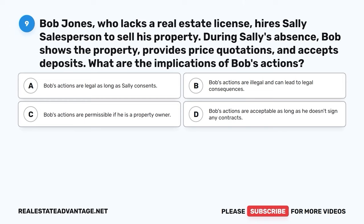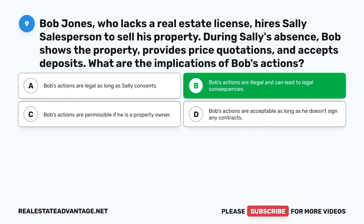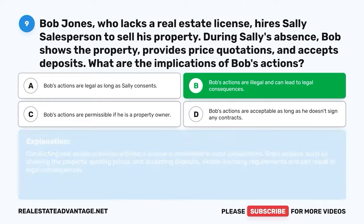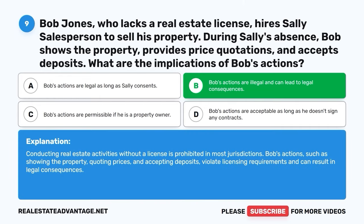Question 9. Bob Jones, who lacks a real estate license, hires Sally's salesperson to sell his property. During Sally's absence, Bob shows the property, provides price quotations, and accepts deposits. What are the implications of Bob's actions? A. Bob's actions are legal as long as Sally consents. B. Bob's actions are illegal and can lead to legal consequences. C. Bob's actions are permissible if he is a property owner. D. Bob's actions are acceptable as long as he doesn't sign any contracts. The correct answer is B: Bob's actions are illegal and can lead to legal consequences. Conducting real estate activities without a license is prohibited in most jurisdictions. Bob's actions — showing the property, quoting prices, and accepting deposits — violate licensing requirements.